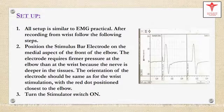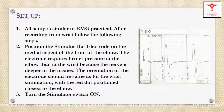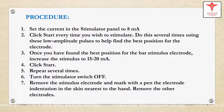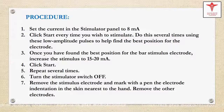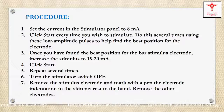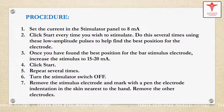Turn the stimulator switch on. Set the current in the stimulator panel to 8 mA. Click start every time you wish to stimulate. Do this several times using these low amplitude pulses to help find the best position for the bar. Once you have found the best position for the bar stimulus electrode, increase the stimulus to 15 to 20 mA.